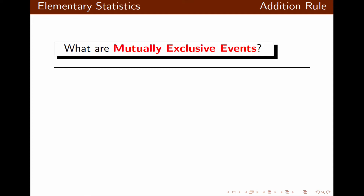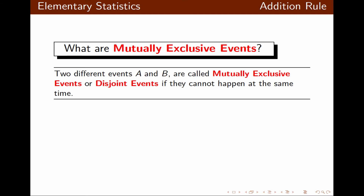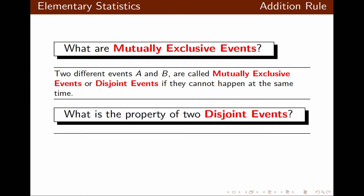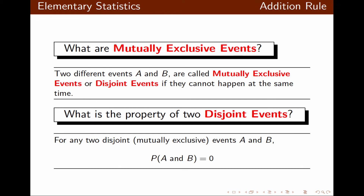Now, mutually exclusive events. What are mutually exclusive events? Two events, A and B, are called mutually exclusive or disjoint events if they cannot happen at the same time. The major property of disjoint events is that once two events are mutually exclusive, the probability that they happen at the same time is 0.